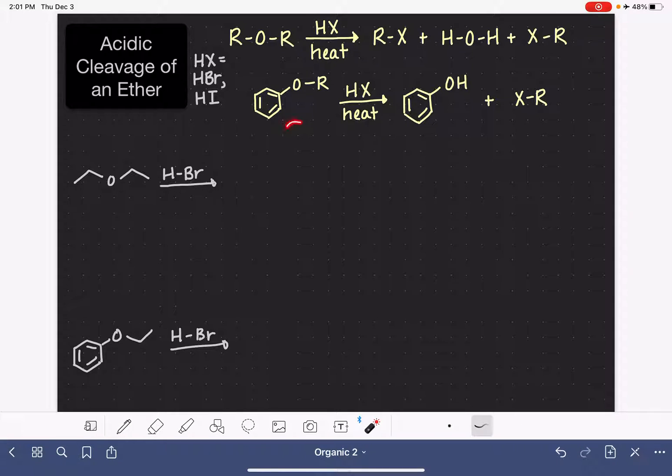If we do this reaction with an ether that has a benzene ring attached directly to the oxygen, one of the products is going to be phenol. You won't be able to put a halogen directly on that benzene ring. We're going to look at the mechanism of this reaction to explain why this product is formed and how the reaction works overall.